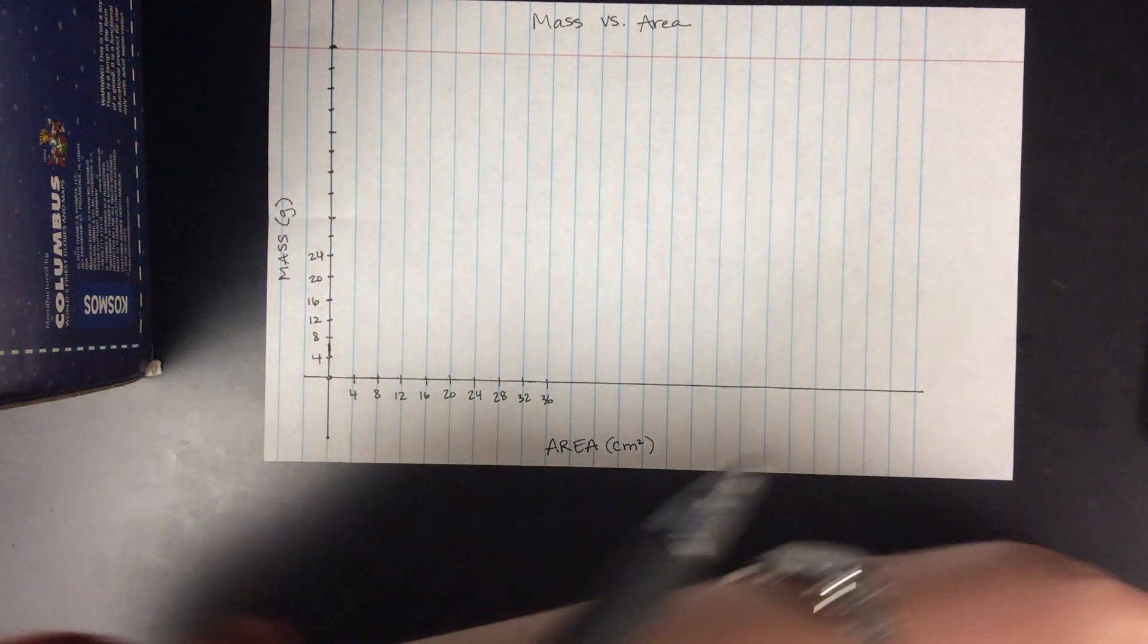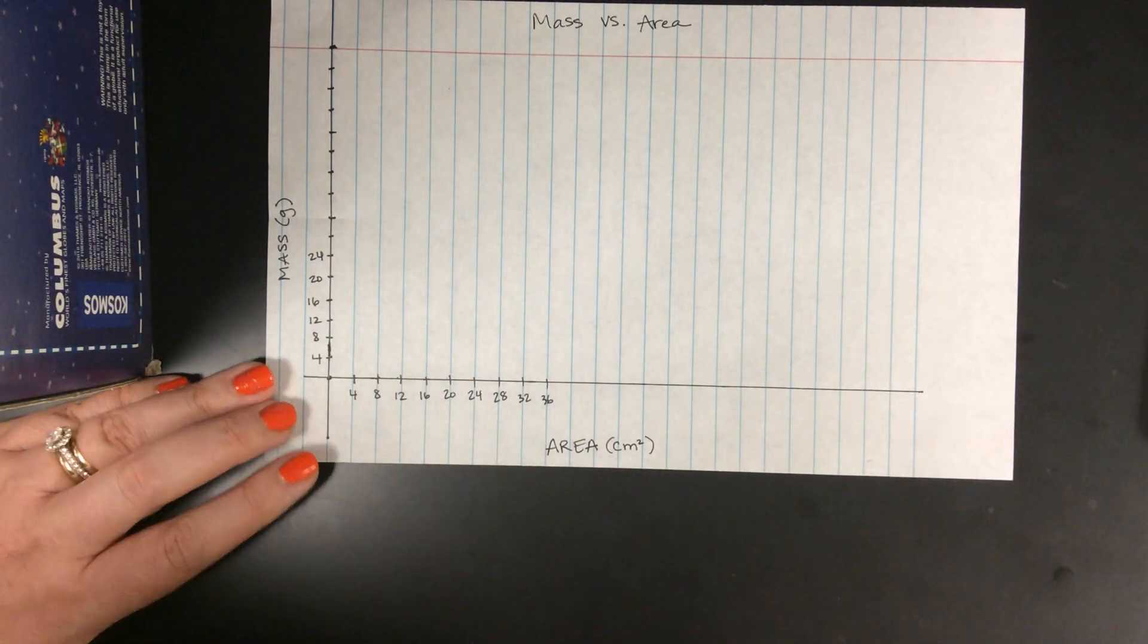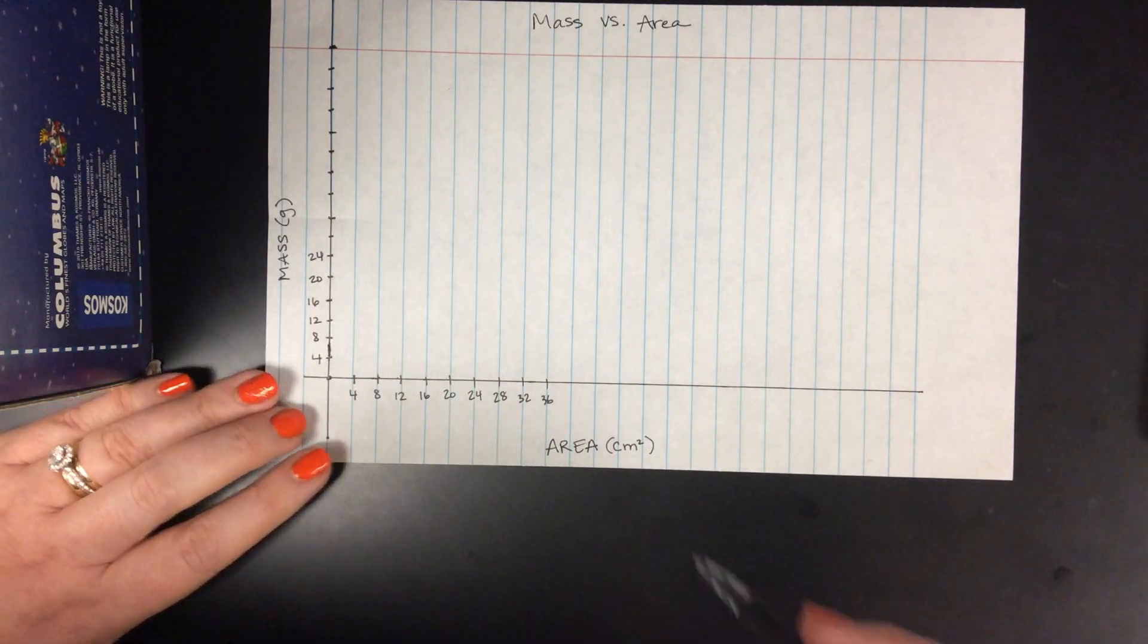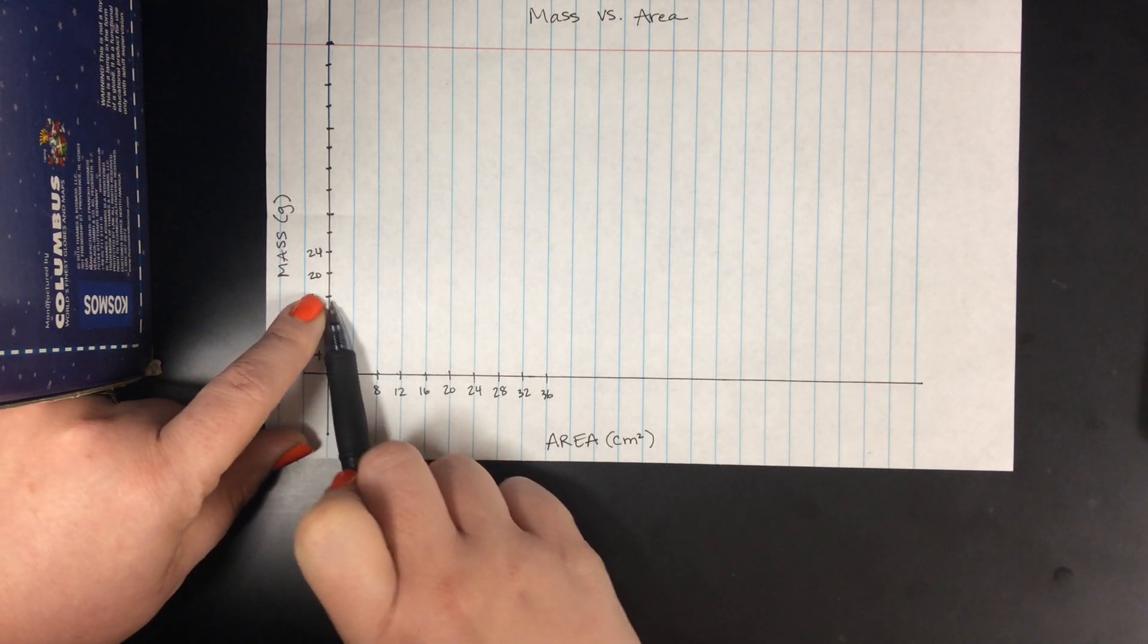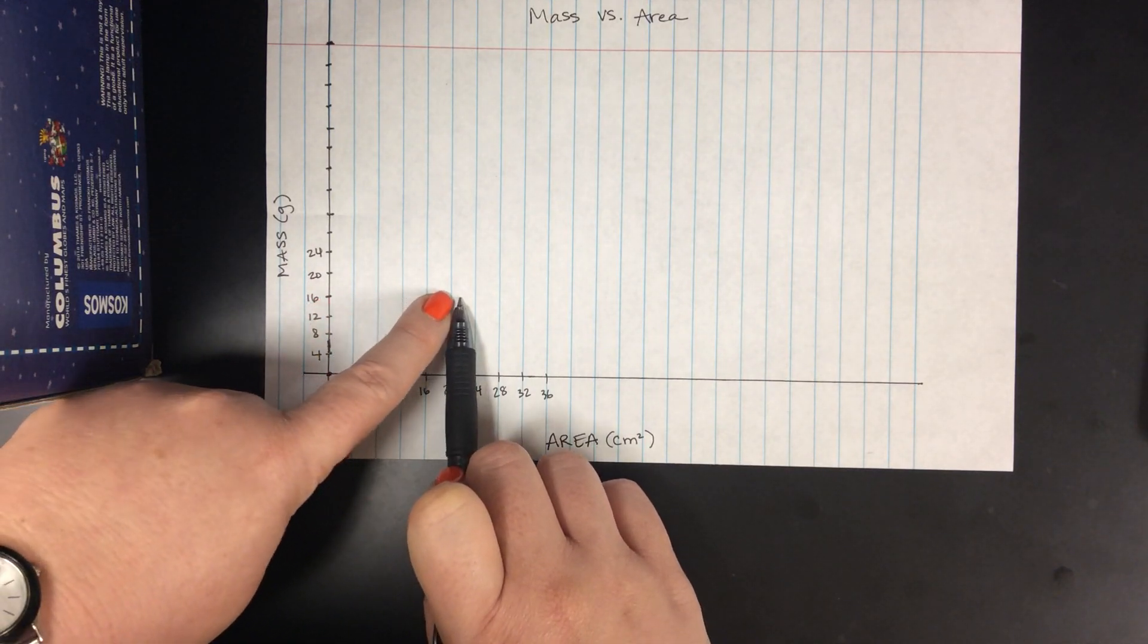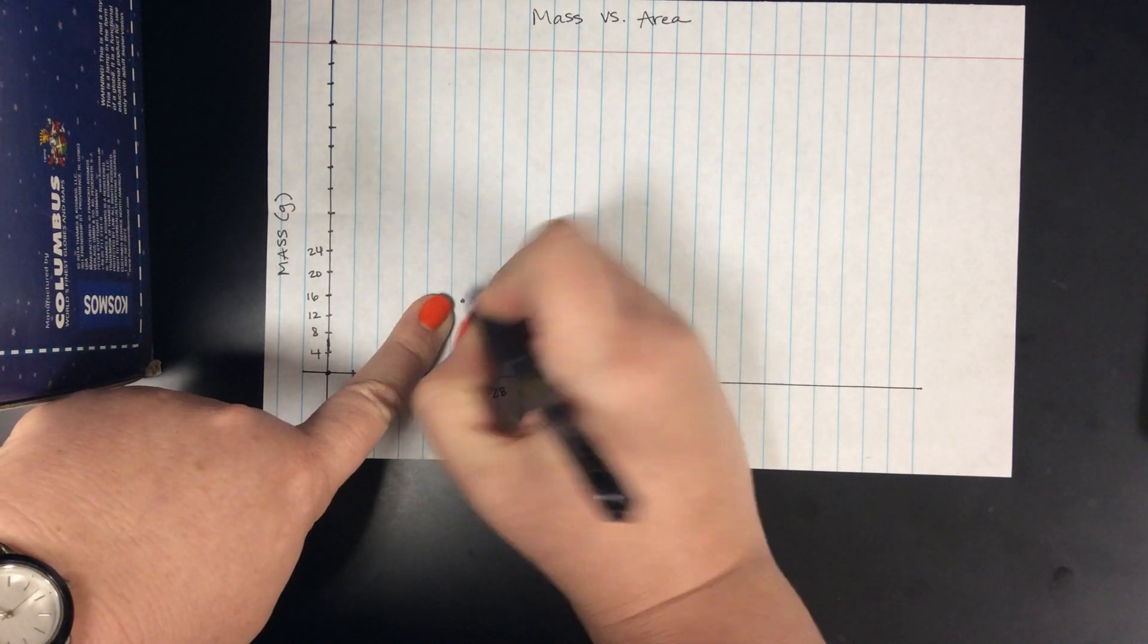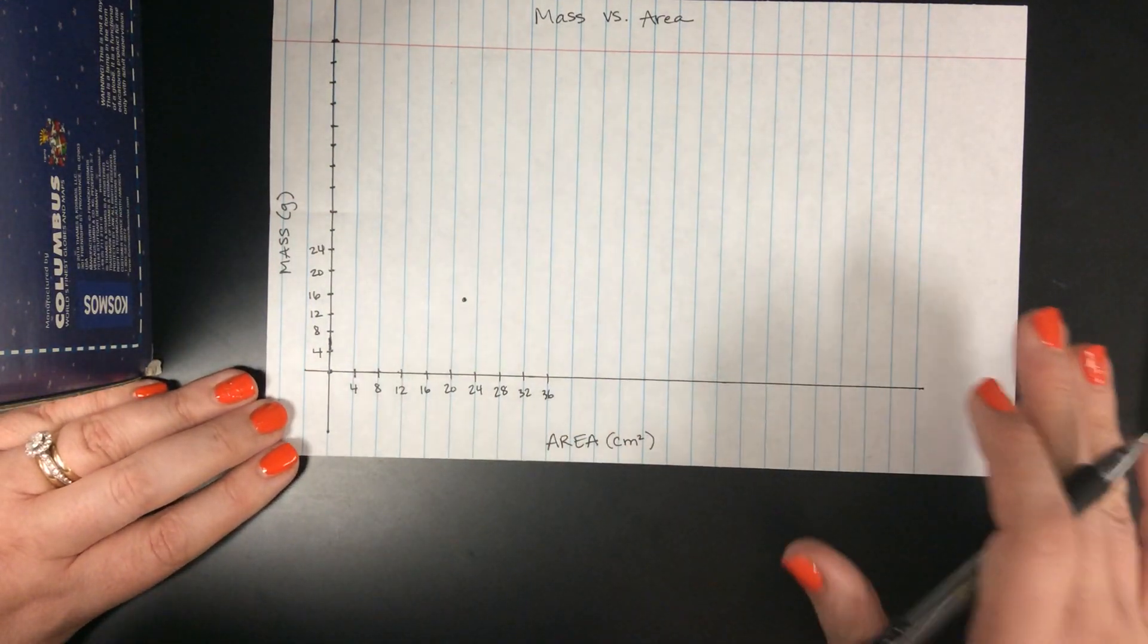Let's say that you have a piece with a mass of 16 grams and an area of 22 centimeters squared. So our mass 16, find that, area I said 22, and we're going to follow those two spots until they intersect and then make a dot right there. It's just that easy.